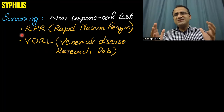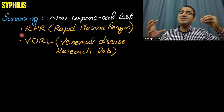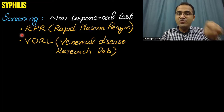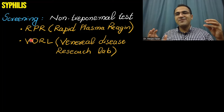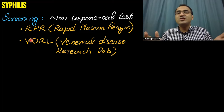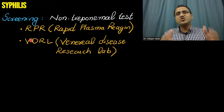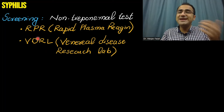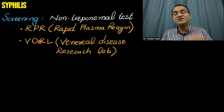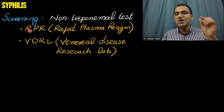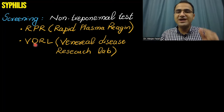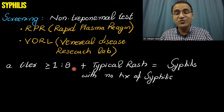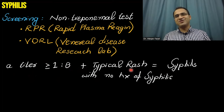In secondary or tertiary syphilis, you perform the non-treponemal screening tests: RPR and VDRL. RPR and VDRL are the screening tests for secondary and tertiary syphilis. For primary syphilis, dark field microscopy is the diagnostic test, because in primary syphilis the immune system has not yet formed antibodies against the bacteria. RPR and VDRL detect antibodies, which are usually negative in primary syphilis. A titer of RPR greater than or equal to 1:8 with the typical rash is diagnostic for syphilis.